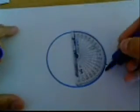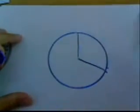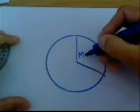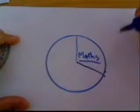Starting at zero, come around, 120 degrees is here. And there we are. That slice will represent the number of people who like maths as their favorite subject.